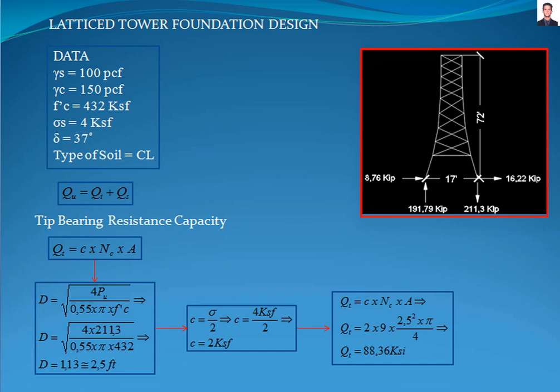In this picture are the forces acting on the latticed towers. The data is in this table, where the soil report gives a soil type of organic clay of low plasticity. The soil bearing capacity is 4 kilopounds per square foot. The compressive strength of the concrete is 432 kilopounds per square foot. The effective friction angle is 37 degrees and the specific weight of the soil is 100 pounds per cubic foot. The bearing capacity of the pile required to support the loads transferred from the latticed tower, according with paragraph B from section 6.3.1.1 of the IEEE 691 standard, is calculated with this equation.